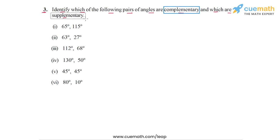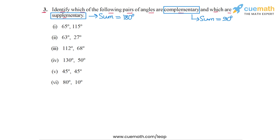Two angles are complementary if their sum is equal to 90 degrees, and two angles are supplementary if their sum is equal to 180 degrees. So for each of these pairs of angles we simply have to calculate the sum and check whether it is 90 degrees or 180 degrees.